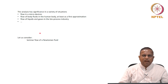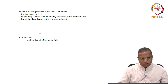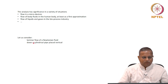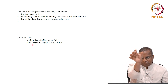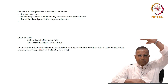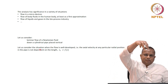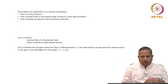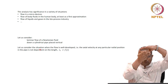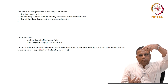Let us consider laminar flow of a Newtonian fluid — that is the first assumption. We are looking at laminar flow of a Newtonian fluid down a cylindrical pipe placed vertically. We are going to consider the situation when the flow is well developed. At the entrance and exit there could be end effects, but for a majority of the pipe the flow would be well developed.